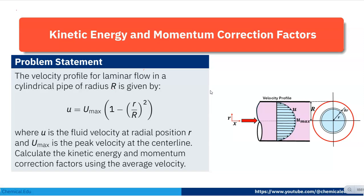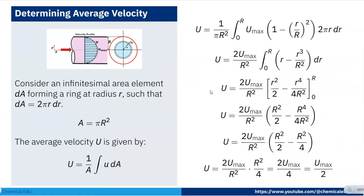We need to calculate kinetic energy and momentum correction factor using average velocity. Consider an infinitesimal area element dA forming a ring at radius r, such that dA = 2πr dr. The cross-sectional area A = πR², where capital R is the radius of the pipe.